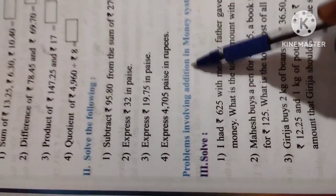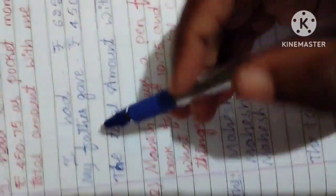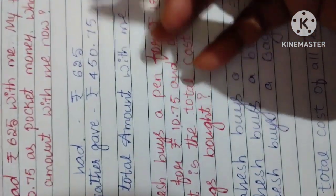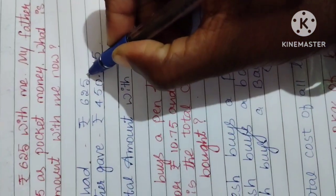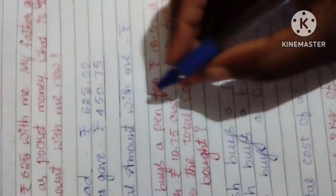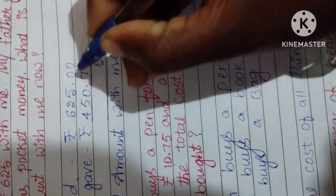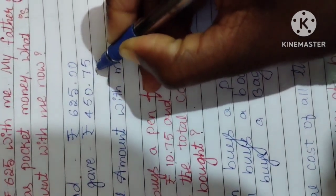Already they are given, this is addition. So you can add now. First you can write like this: I had Rs. 625. There is no paise, so you can write here 0, 0. Next, 0 plus 5 is 5, 7 plus 0 is 7.